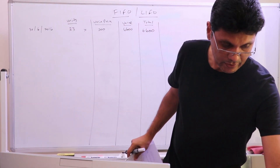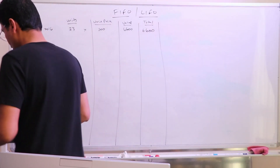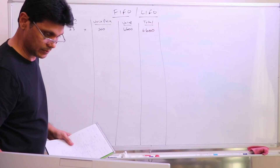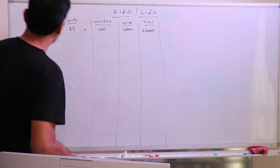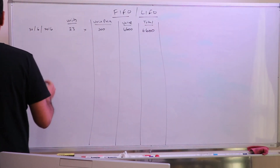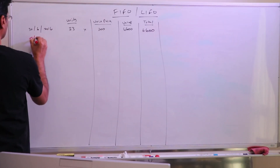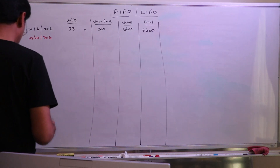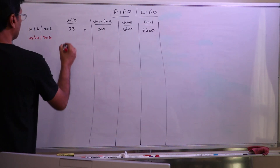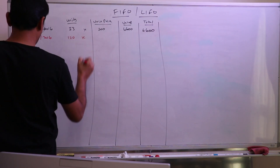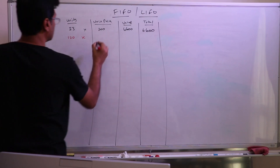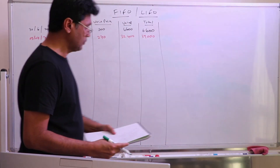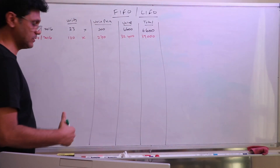You are given purchases and sales. What are the purchases? On 3rd July 2016, 120 units were purchased at $270 each — that's $270 per unit. After July, what is the next transaction?